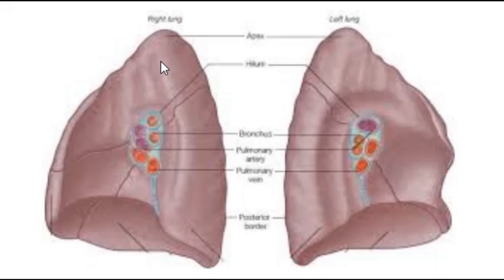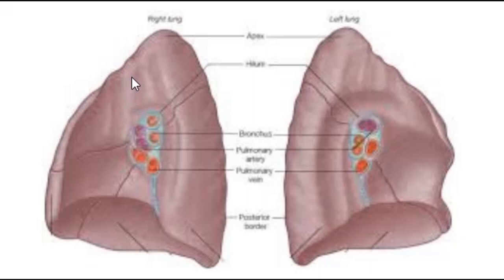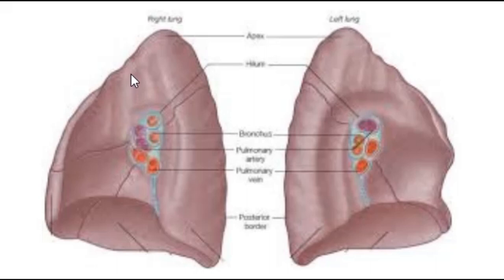Above the azygous vein groove, we have the groove for the esophagus. Beside the esophagus is a little groove made by the trachea — your windpipe. Beside the trachea, there's a groove for the brachiocephalic vein, though it's not always very prominent depending on the specimen. There's also a little notch near the apex — a dip in the lung — which is the groove for the first rib.